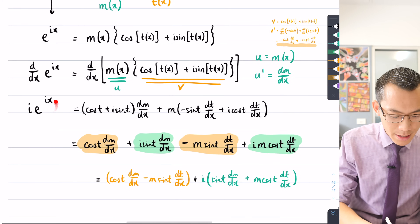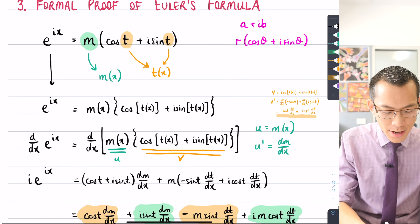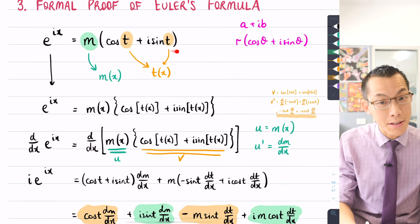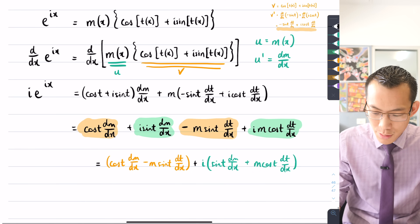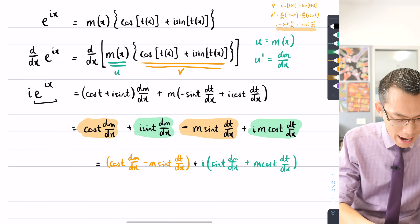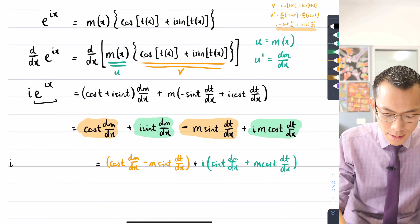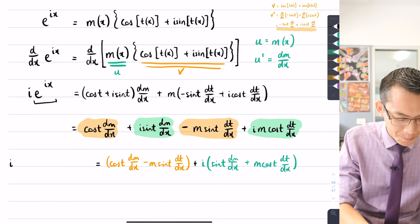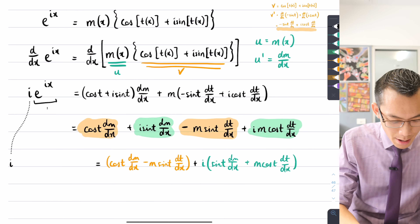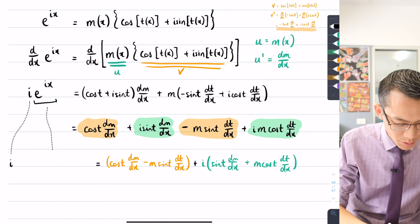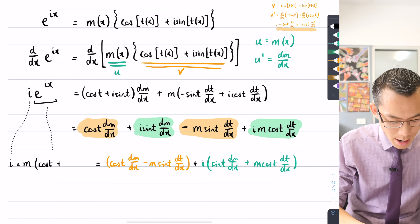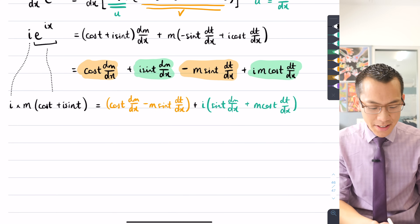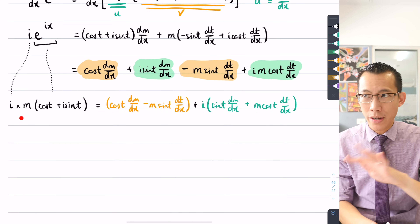Now returning to the left-hand side: e^(ix) was defined from the start as m · cos t + i · sin t. Substituting that in, with the i hanging out front, gives i · m · (cos t + i · sin t). A little more work is needed to properly separate the real and imaginary parts since that i interacts with everything inside.